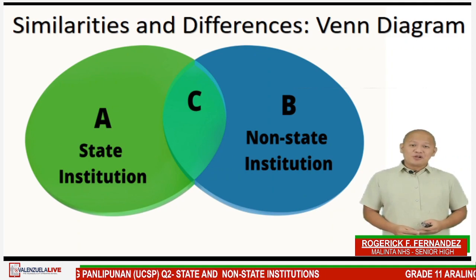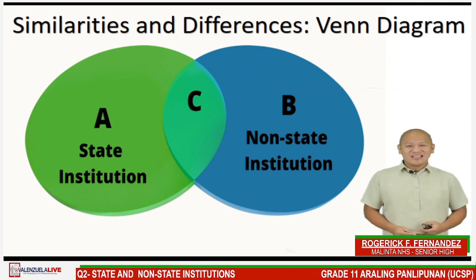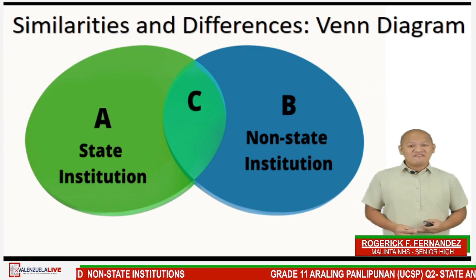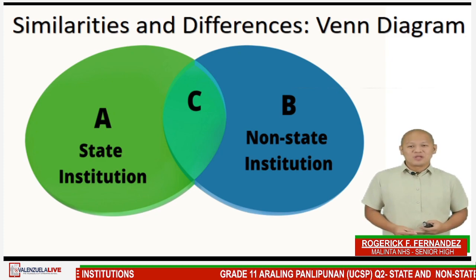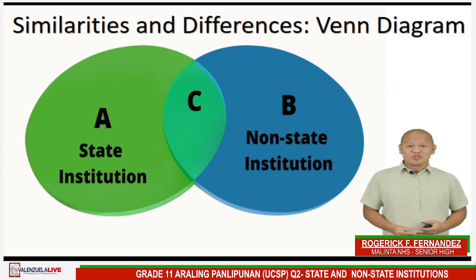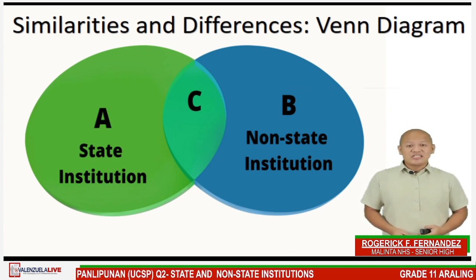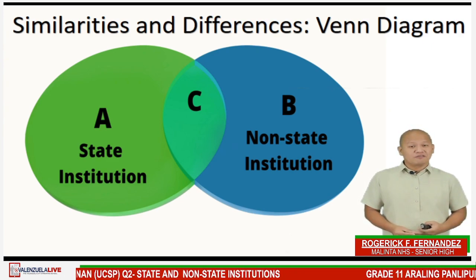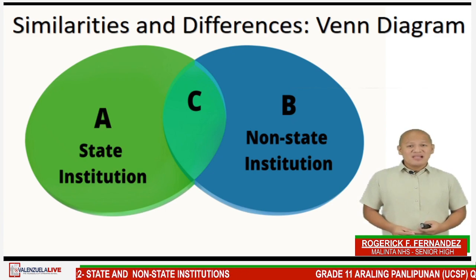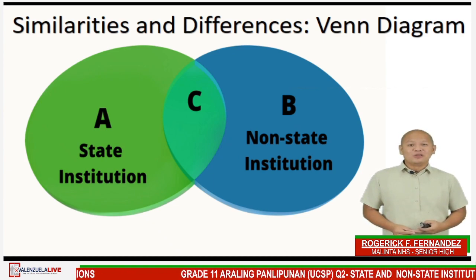Now that you have learned about state and non-state institutions, you are ready to accomplish this compare-contrast graphic organizer called the Venn Diagram. For part A, write down all attributes of state institutions. For part B, list down all attributes of non-state institutions. For part C, or the overlapping parts of the two circles, write down the similarities of state institutions and non-state institutions. You can do this activity on your UCSP notebook.